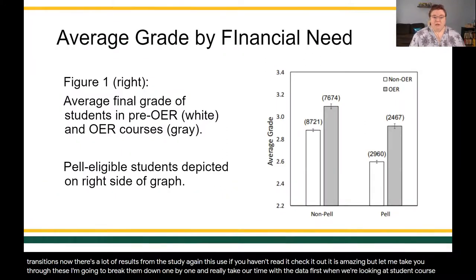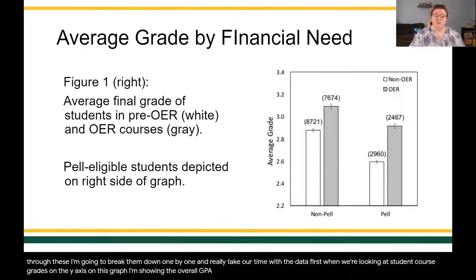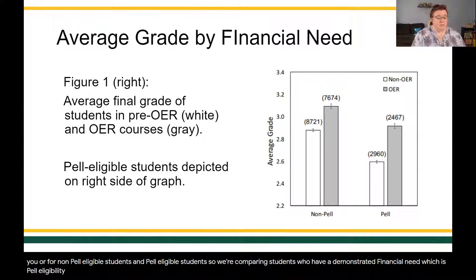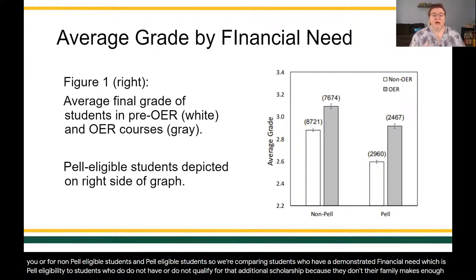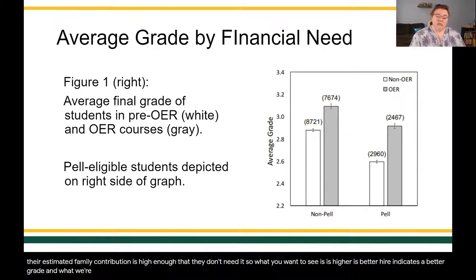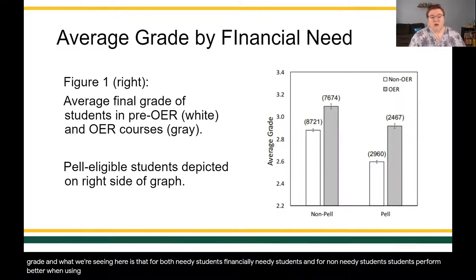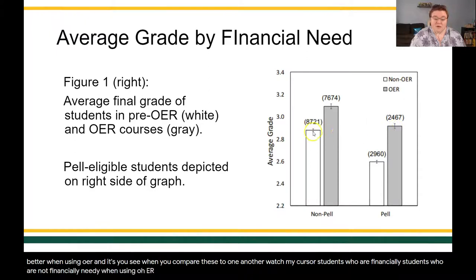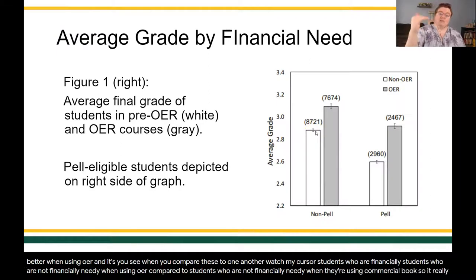Looking at student course grades, with overall GPA on the y-axis and two groups — non-Pell-eligible and Pell-eligible students — we see that for both financially needy and non-needy students, performance is better when using OER. Pell-eligible students using OER perform about as well as non-Pell-eligible students using commercial books. So OER really levels the playing field for financially needy students. Even for students with less financial need, performance improves too — across the board, OER is improving student performance.